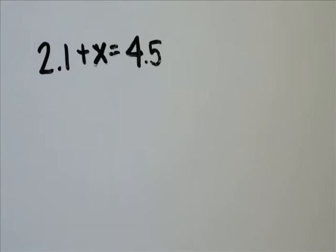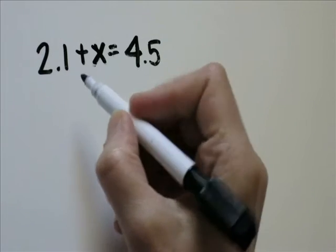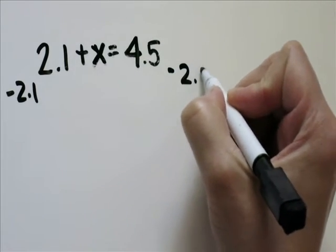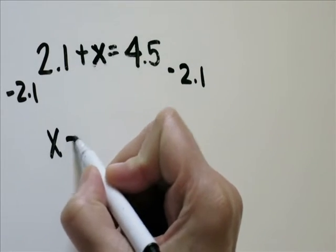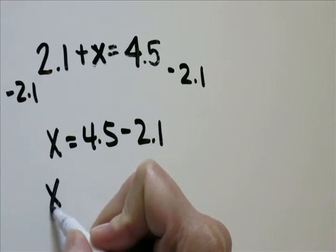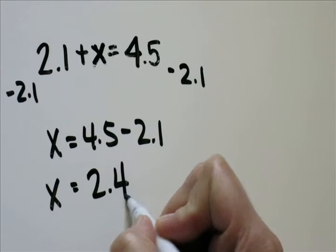Problem 20, 2.1 plus x equals 4.5. Minus 2.1 from each side, giving you x equals 4.5 minus 2.1 is going to give you 2.4.